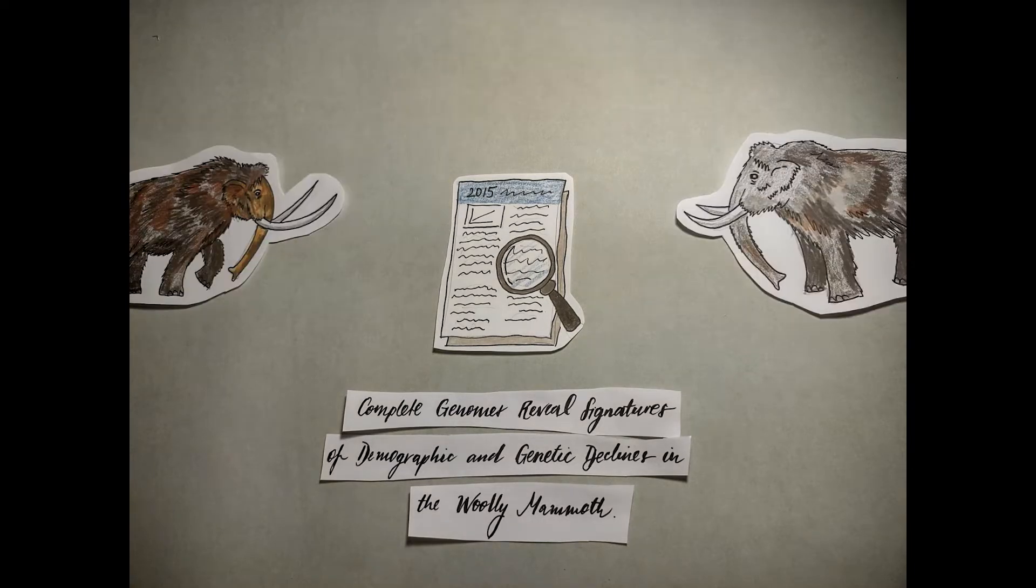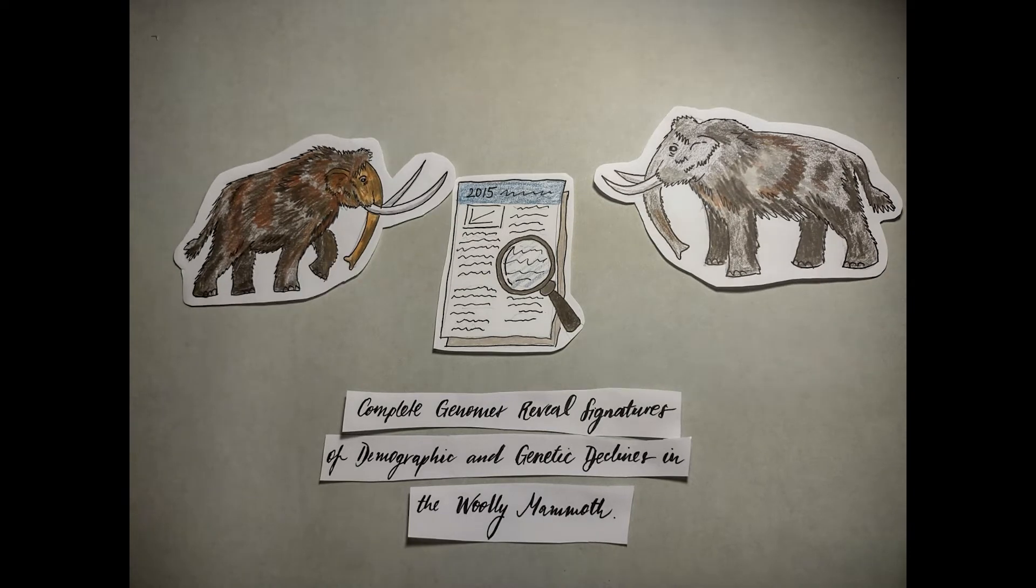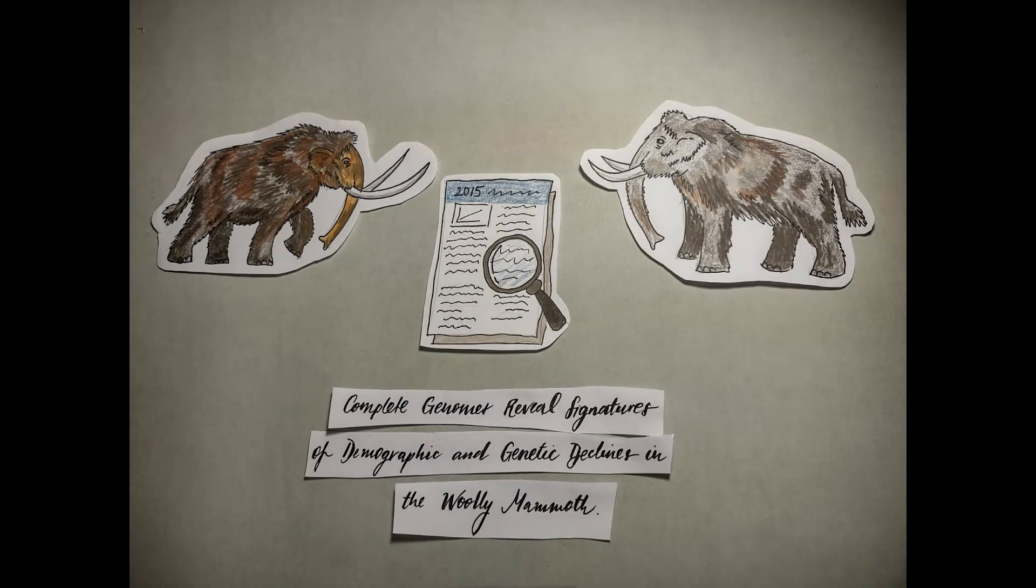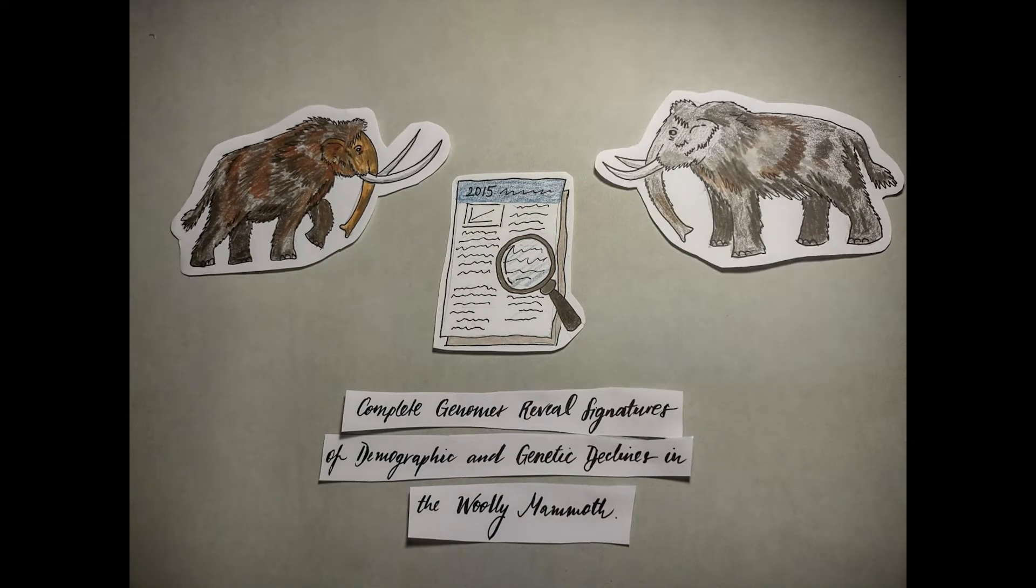These two mammoths, although the same species, have variations in their genomes that are worth comparing. The first one is 4,300 years old and came from Wrangell Island, one of the last of its kind.